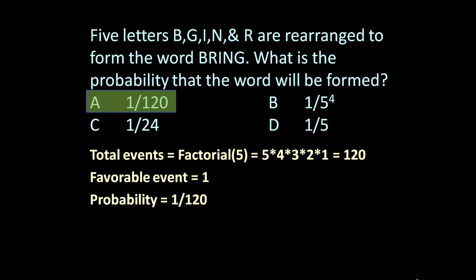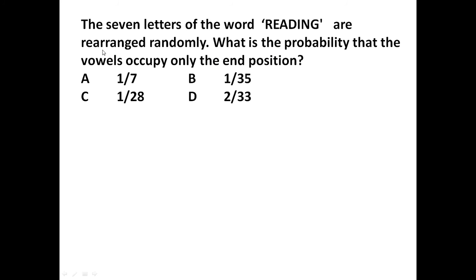Now let us see one more problem of a similar type with a slight change. The 7 letters of the word 'reading' are arranged randomly. What is the probability that the vowels occupy only the end positions? We need to determine what the favorable events are and what the total events possible are.